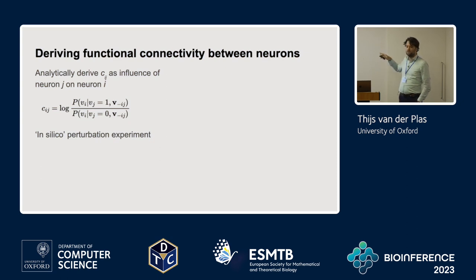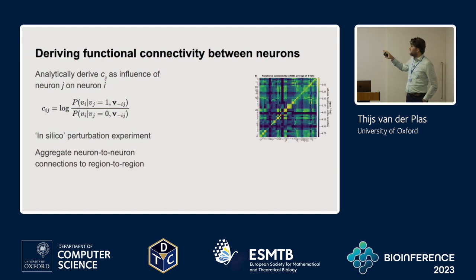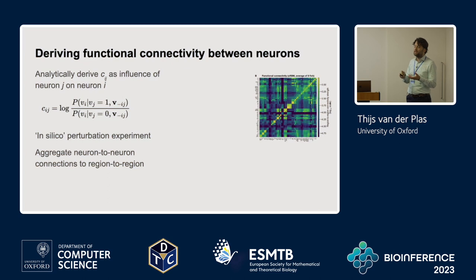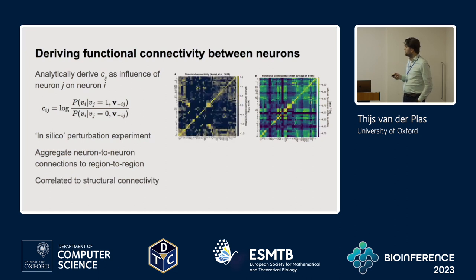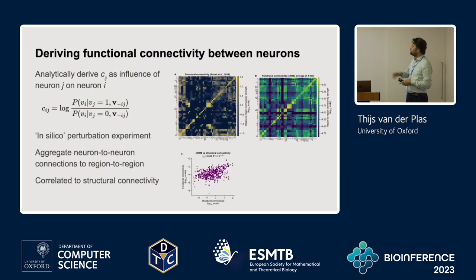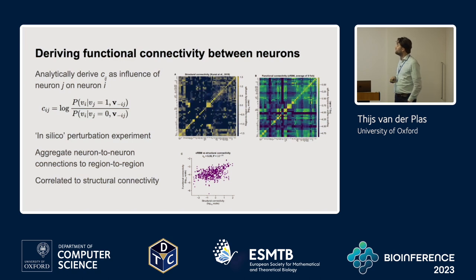We perform this for all pairs of neurons, giving a very large functional connectivity matrix between all pairs of neurons, which I've aggregated to pairs of anatomical regions. We compare this to data from our collaborators who performed a structural connectivity experiment — tracing synapses to find which neurons are connected — yielding a connectivity matrix of the same anatomical regions based on structural connectivity. We find that the structural and functional connectivity are correlated, with some interesting differences we would like to further investigate.